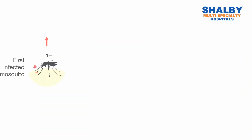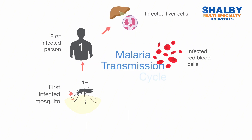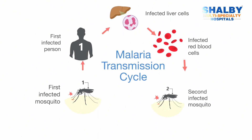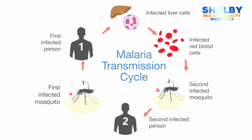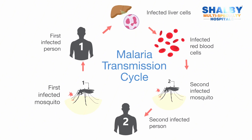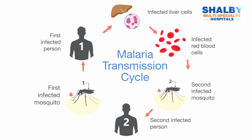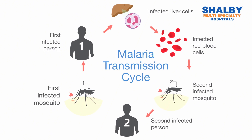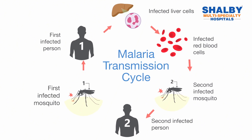Another example: in your family, suppose somebody has got malaria and a mosquito is in your house. If it bites that person, it sucks the malarial parasites, and if the same mosquito bites another person in your family, that person will also get malaria. That's how the disease is spread.